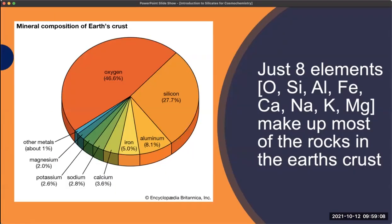In fact, there are only eight elements — oxygen, silicon, aluminium, iron, calcium, sodium, potassium, and magnesium — that make up most of the rocks in the Earth's crust.